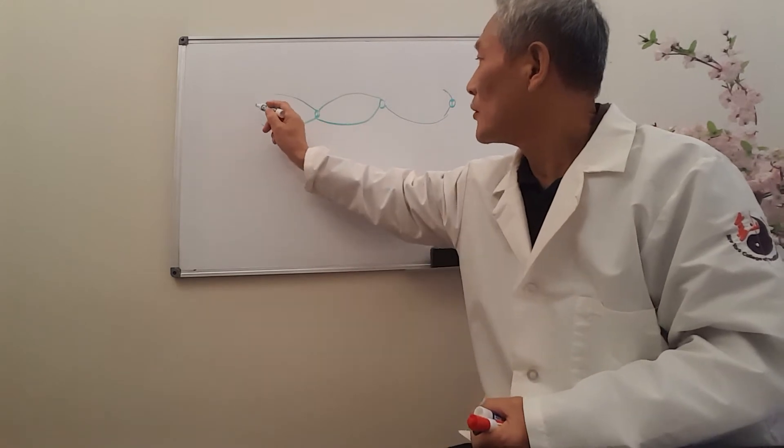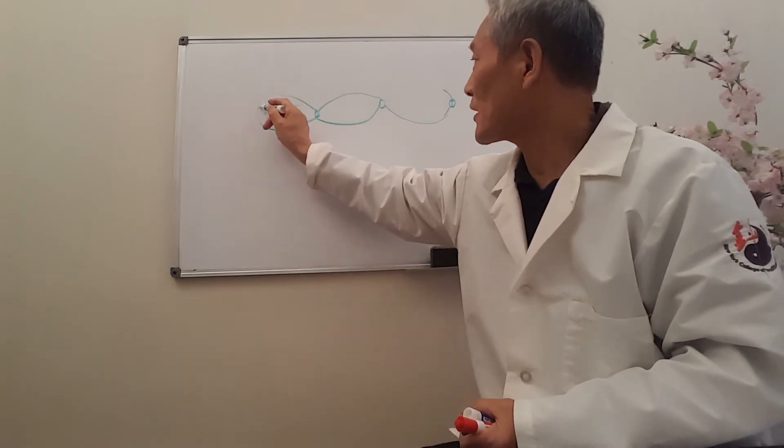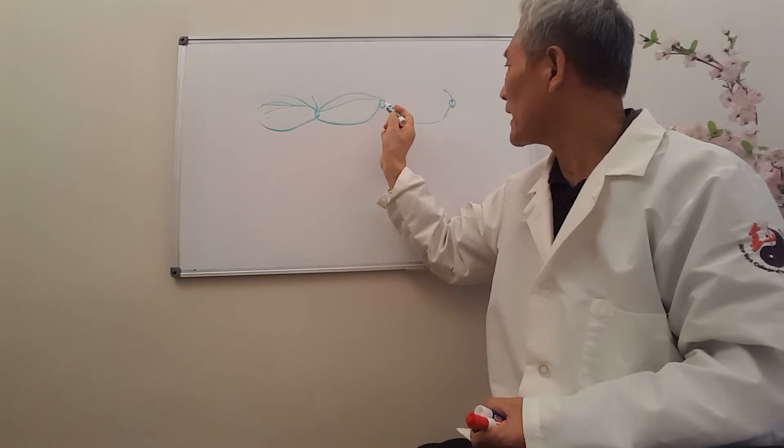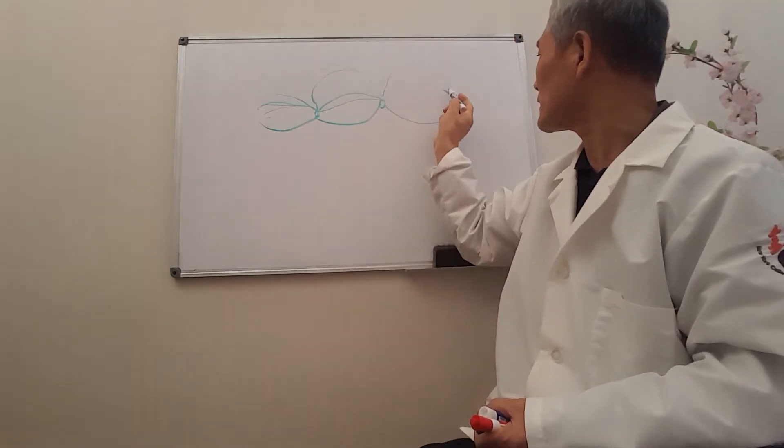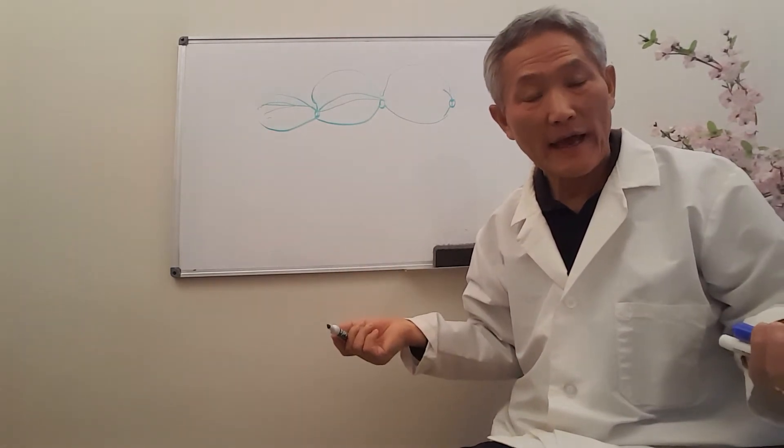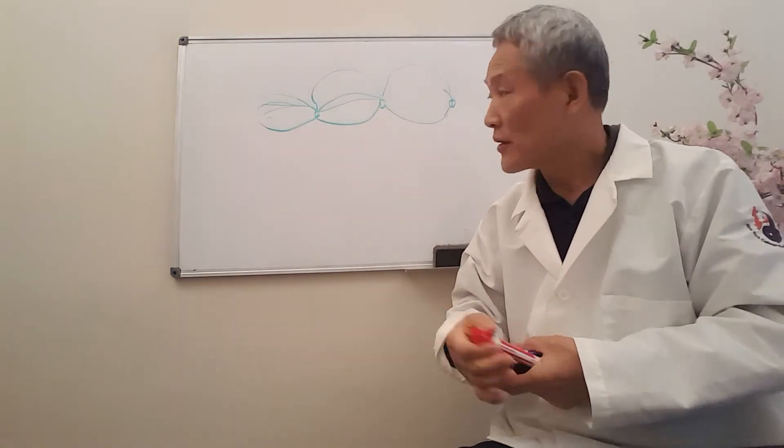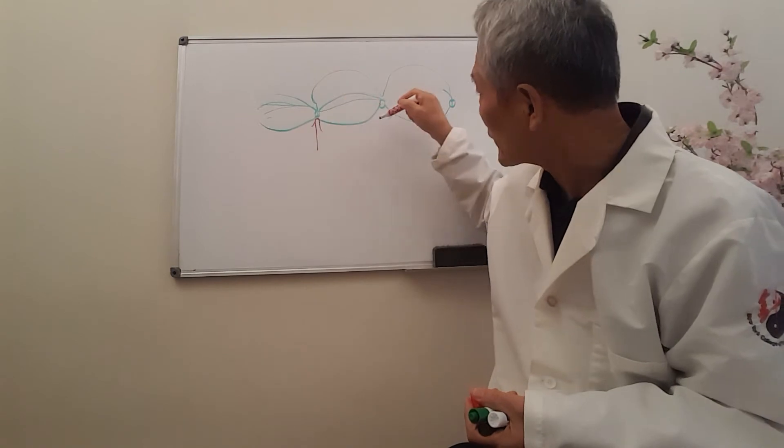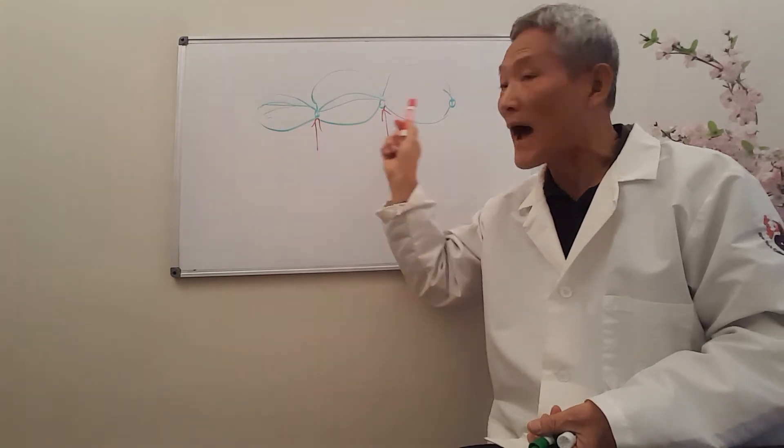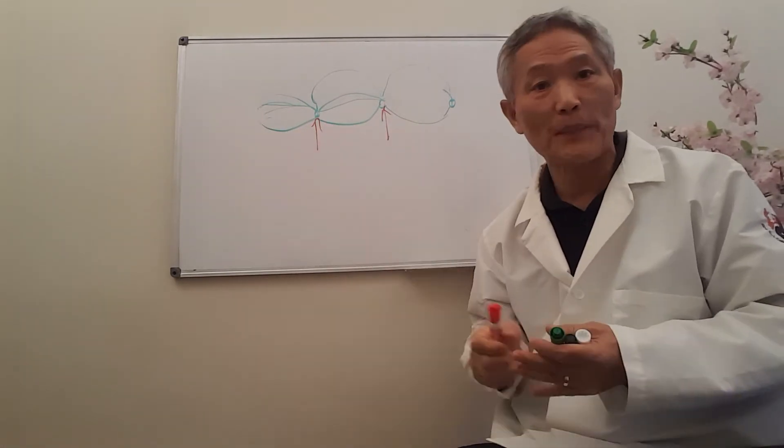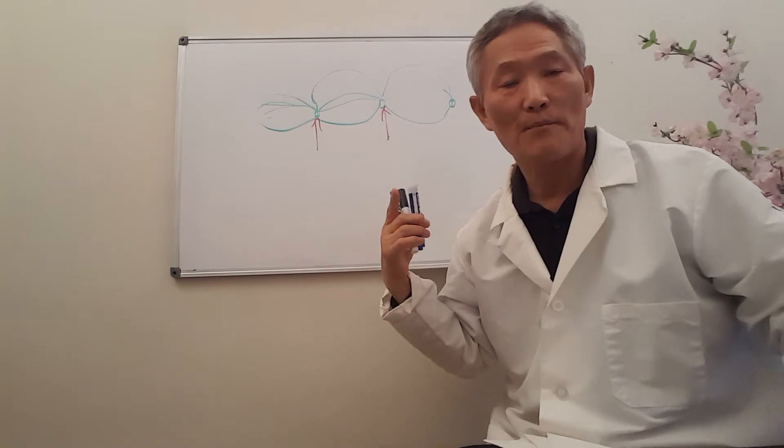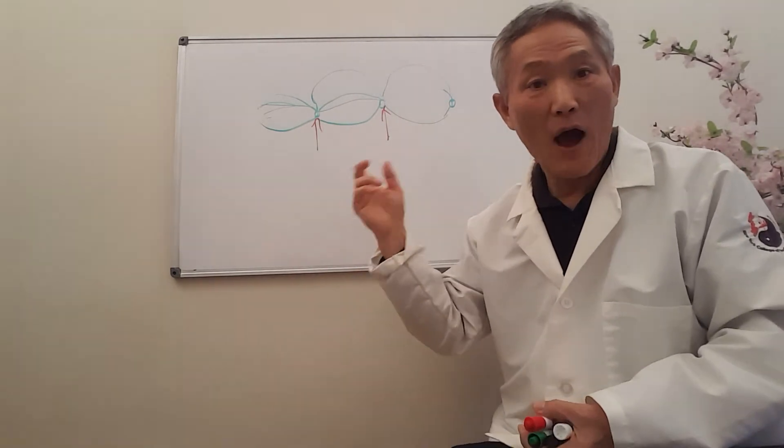Now, all the nerves here do not go from here to here like this one. Usually they jump from here to here, and then jump to here. It's called synapses. And then we usually use this point. Instead of treating a lot of points, we just use a few key spots to take care of the whole area. And this one we call meridians.